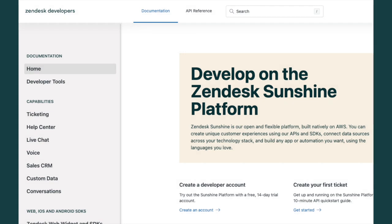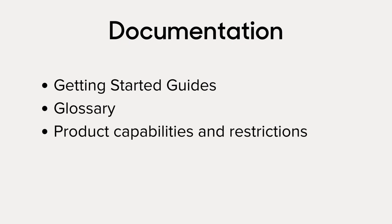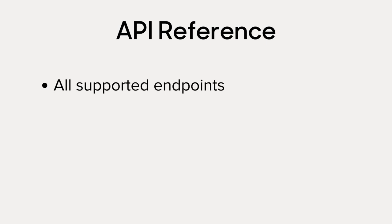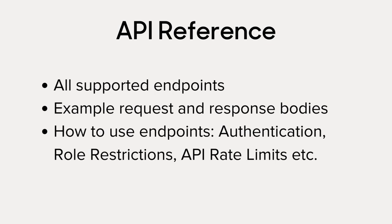What's the difference between Documentation and API Reference, and what can you expect to find in them? Under Documentation, you'll find getting started guides, a glossary of important terminology, as well as capabilities and restrictions for various products. Basically, if you're looking to learn the what and how, you can find it under Documentation. Under API Reference is everything API related — all supported endpoints are listed, as well as example request and response bodies, how to use these endpoints, required authentication, role restrictions, and API rate limits.